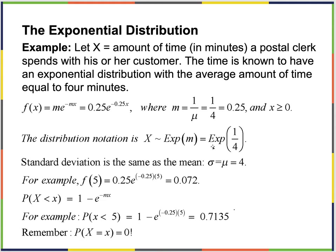The distribution notation: I would write it as (1/μ)e^(−x/μ), similar to the Poisson distribution. Let's go with what the book does. The standard deviation equals the mean — that's the magic of the natural exponent base. For example, to find f(5), that's the density function value, but what we actually want is the CDF: 1 minus e^(−mx), giving the probability of being less than 5.